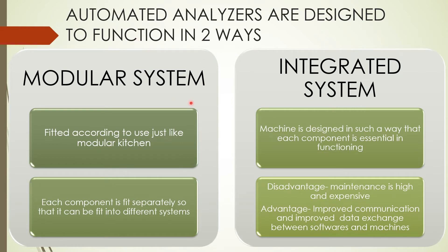Automated analyzers are designated to function in two ways: the modular system and the integrated system. The modular system is fitted according to use, just like a modular kitchen — each component is fitted separately so it can be incorporated into different systems. In the integrated system, the machine is designed such that each component is essential for functioning. Its maintenance cost is high and the instrument is expensive, but the advantage is improved communication and data exchange between softwares and the machine, allowing one person to operate and produce results.